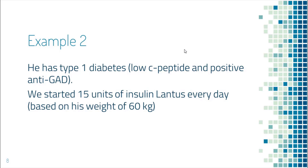You might ask how I got the number of 15 units. It is calculated based on his weight. Normally for people who are not able to make insulin, the dose for long-acting insulin at the beginning should be one-fourth of their weight in kilograms. His weight is 60 kilograms, and one-fourth of that is 15 units. You can always adjust the insulin dose later based on blood sugar numbers.